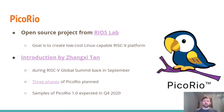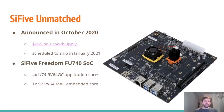Something more practical because it has DRAM is the PicoRio — an open source project from RVlab with the goal of creating a low-cost Linux-capable RISC-V platform. We were very excited at the RISC-V Global Summit in September when it was announced. They have three phases planned for the system-on-chip, with the first expected to have samples by the end of this year. SiFive also followed up in October with a new dev board called Unmatched, currently on Crowd Supply for $665 and expected to ship at the beginning of next year, featuring the new FU740 SoC with four high-performance 64-bit cores plus a companion core.